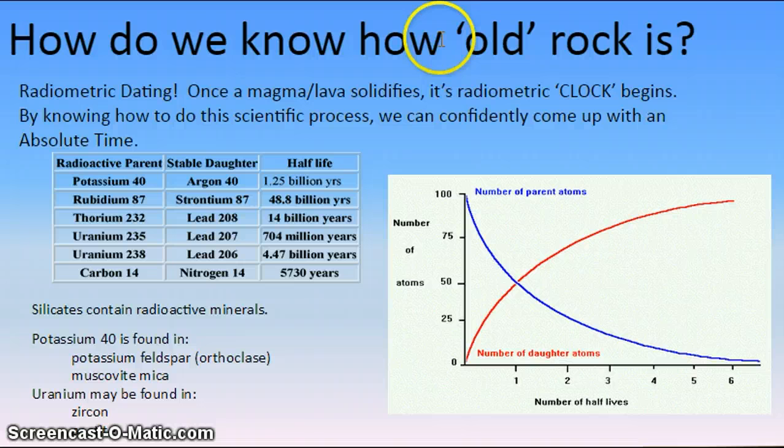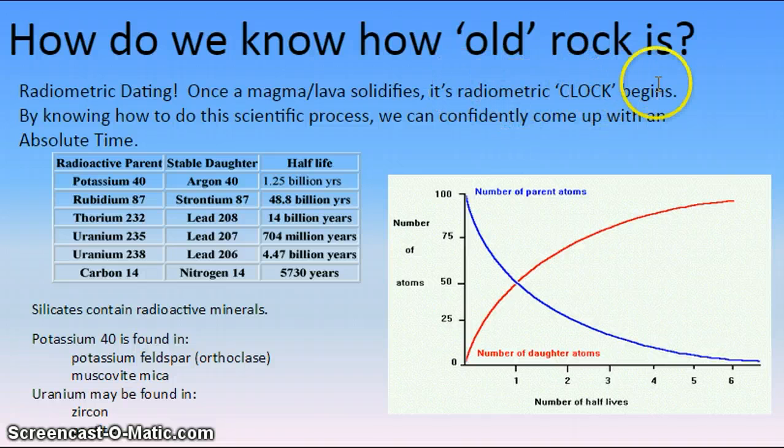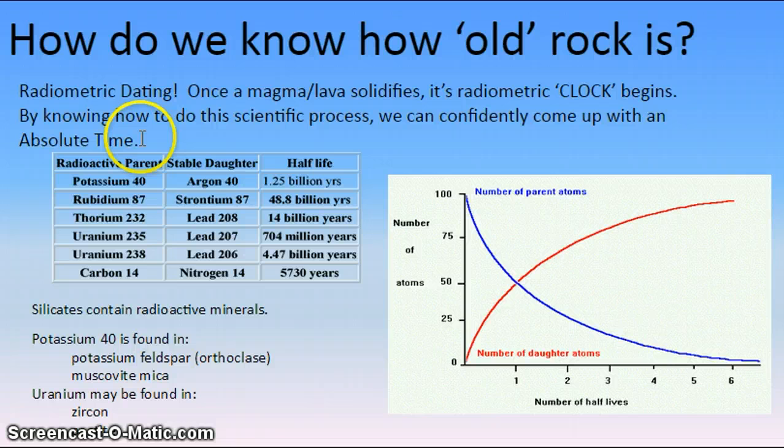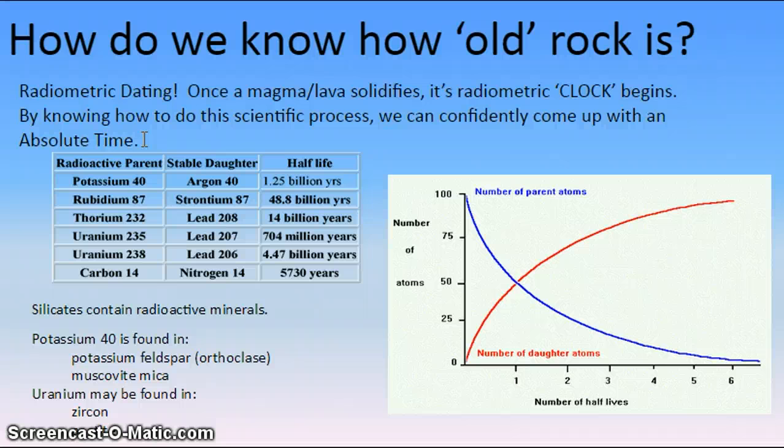So how do we know how old a rock is? We use radiometric dating techniques. Once a magma or lava solidifies, its radiometric clock begins. By knowing how to do this process, this scientific process, we can confidently come up with an absolute time. And this is nice, because this allows us to start making inferences as to how old is the Earth? How old is our solar system? And we can actually date things using radiometric dating techniques.